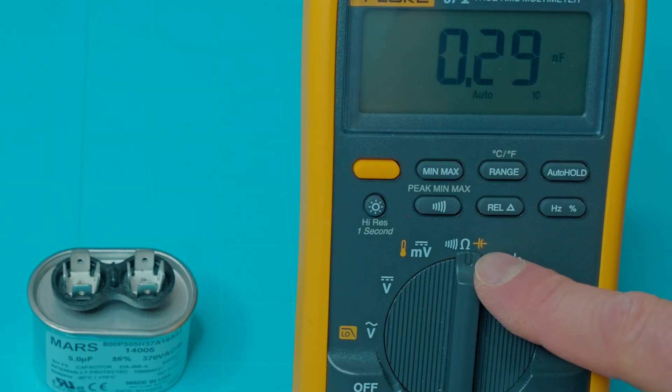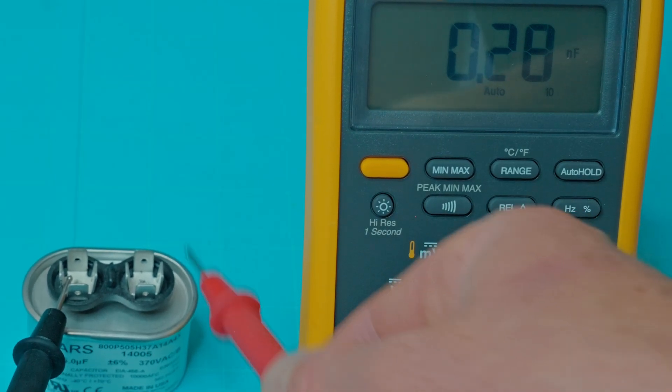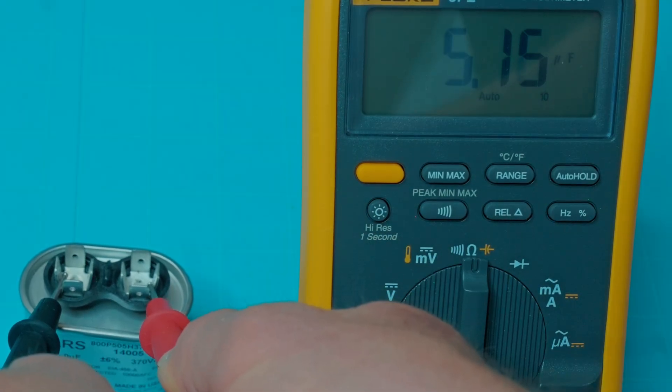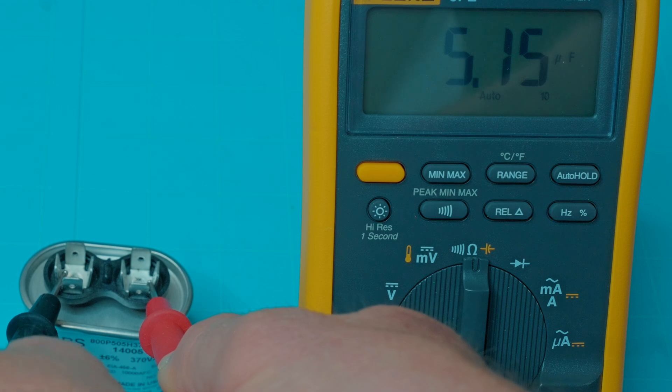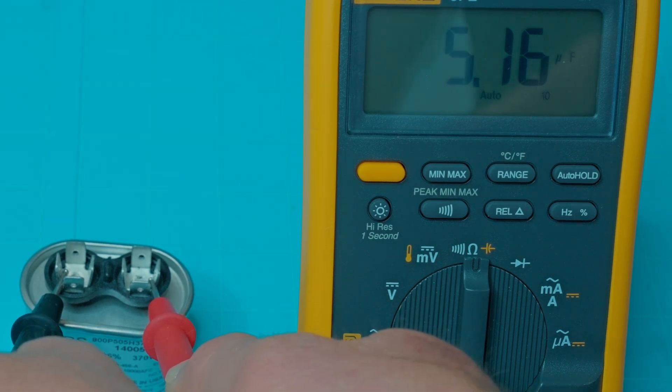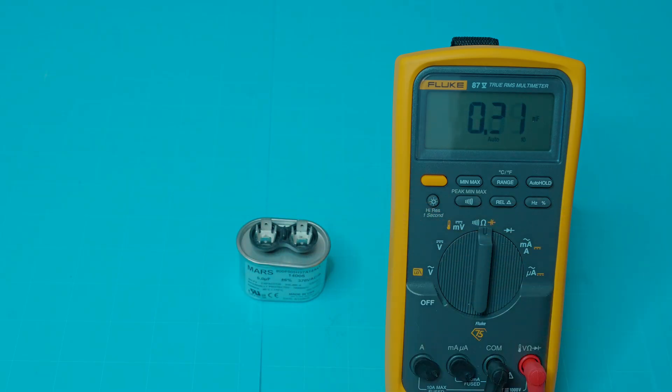I've still got my meter in the capacitance test mode. I'll place one lead on each side of the capacitor and I'm getting around 5.15 microfarads. This particular capacitor is rated for 5 microfarads, so I do know that this capacitor is good. And folks, it's that easy to check any capacitor.